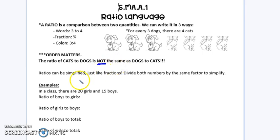And just like fractions, ratios can be simplified. To simplify ratios, all you have to do is divide both numbers of your ratio by the same factor, and we'll look at that in just a second.